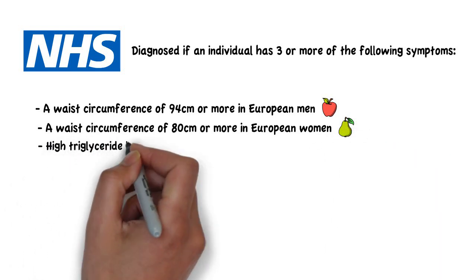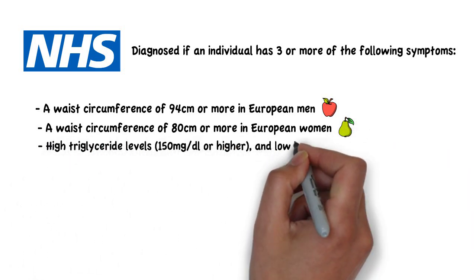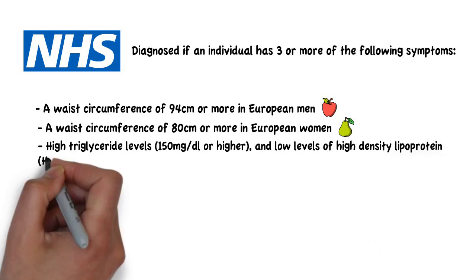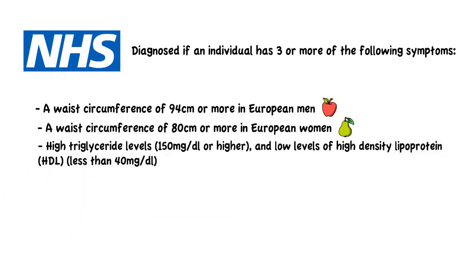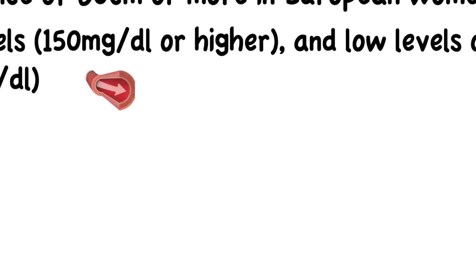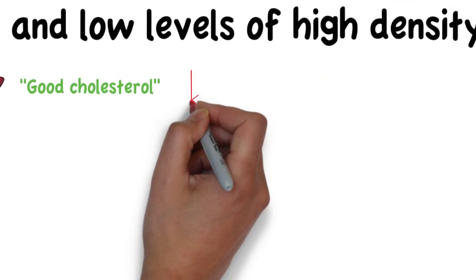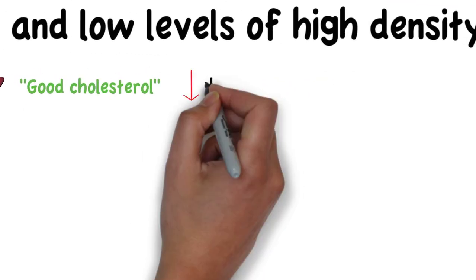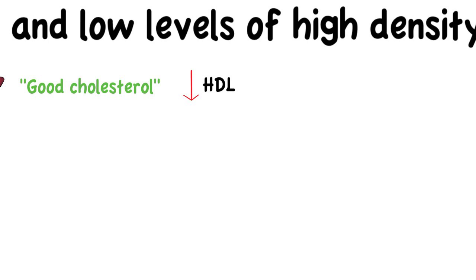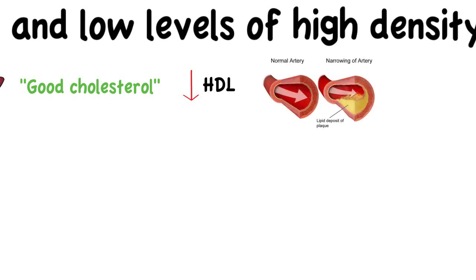High triglyceride levels and low levels of high-density lipoprotein, or HDL, which is the lipoprotein responsible for removing excess cholesterol from the tissues and transporting it back to the liver. It is also termed good cholesterol. Having low levels of HDL can lead to atherosclerosis, where arteries become clogged with fatty substances such as cholesterol.